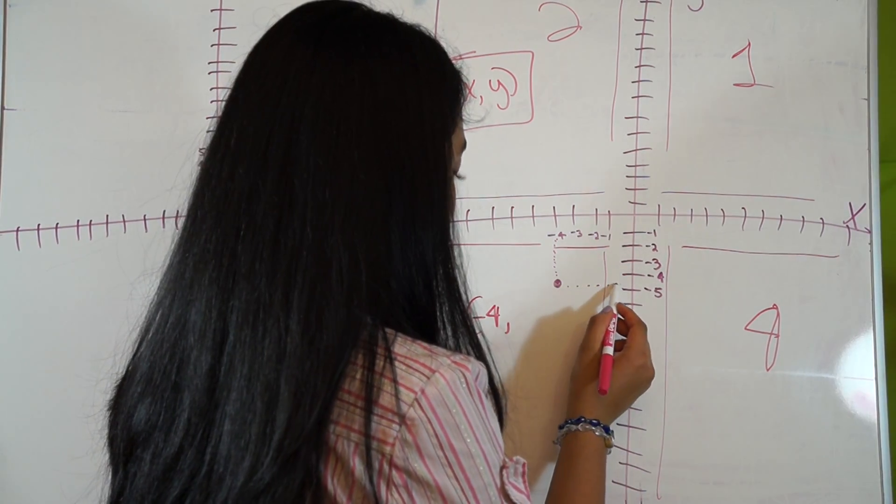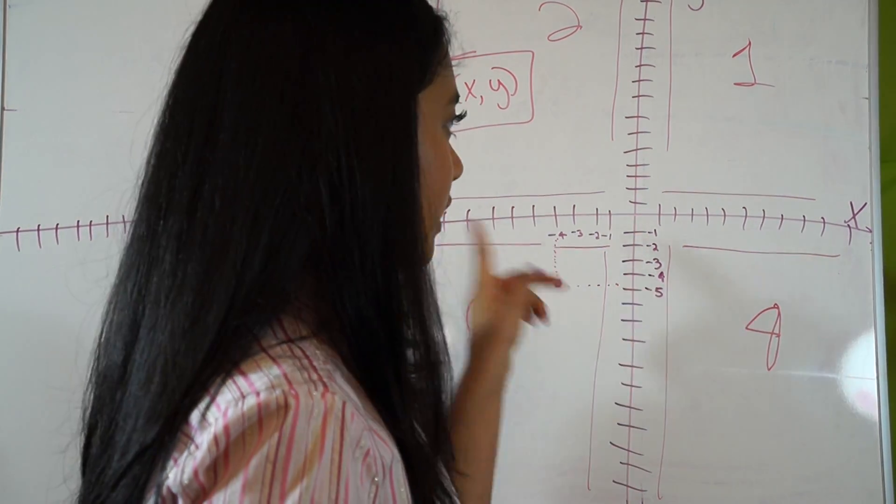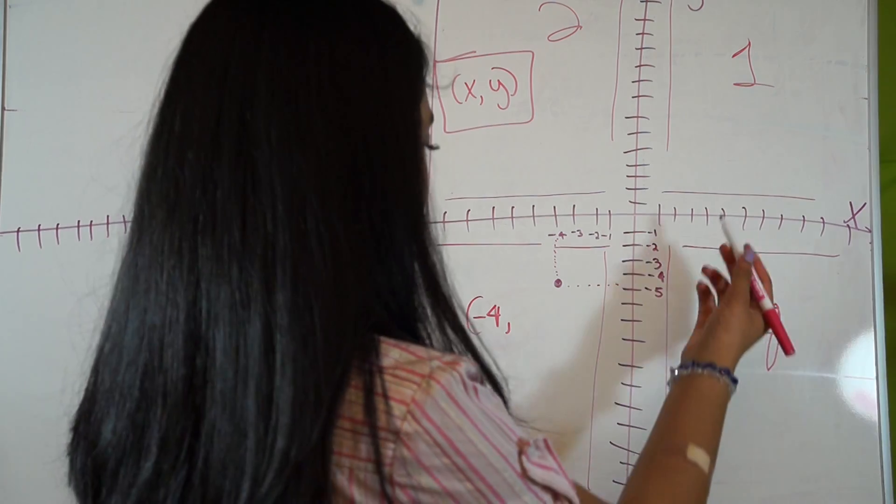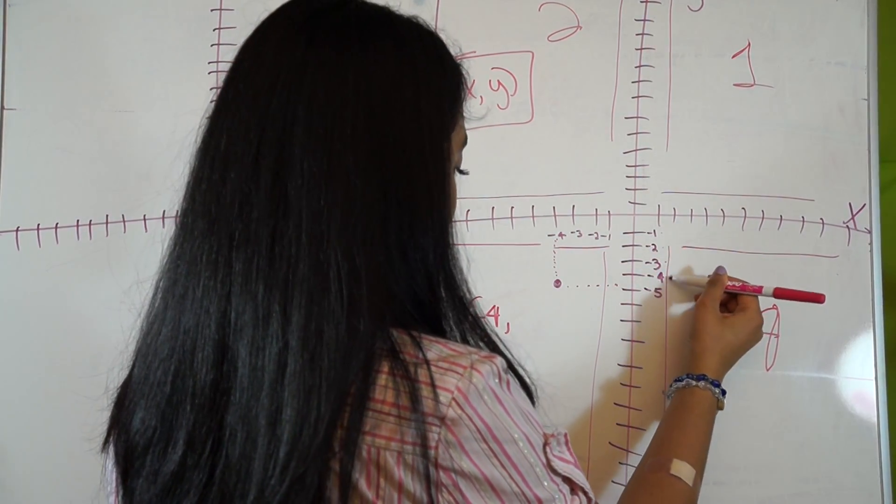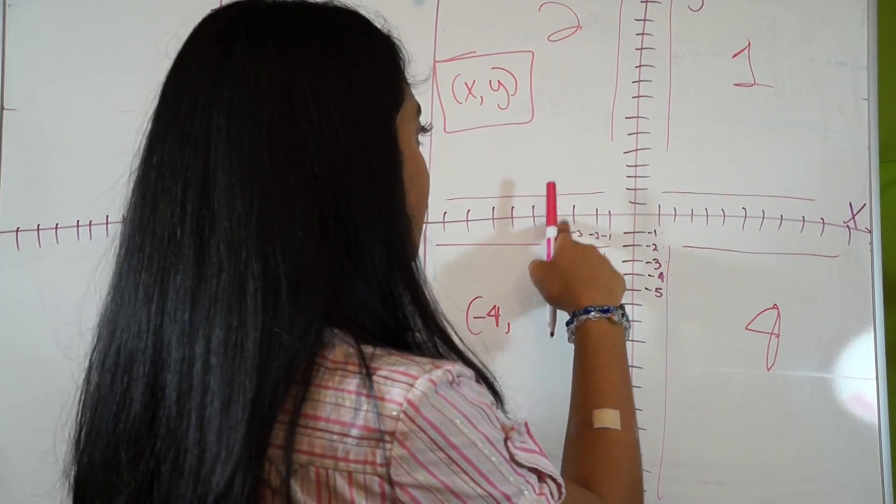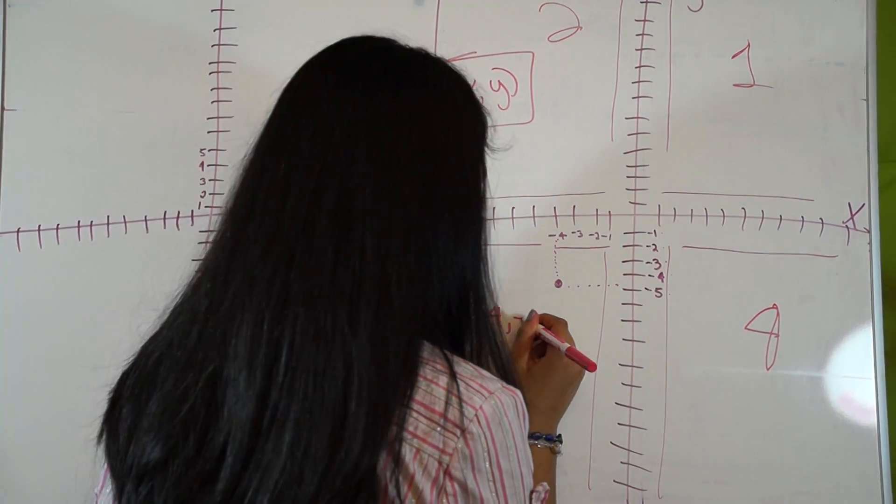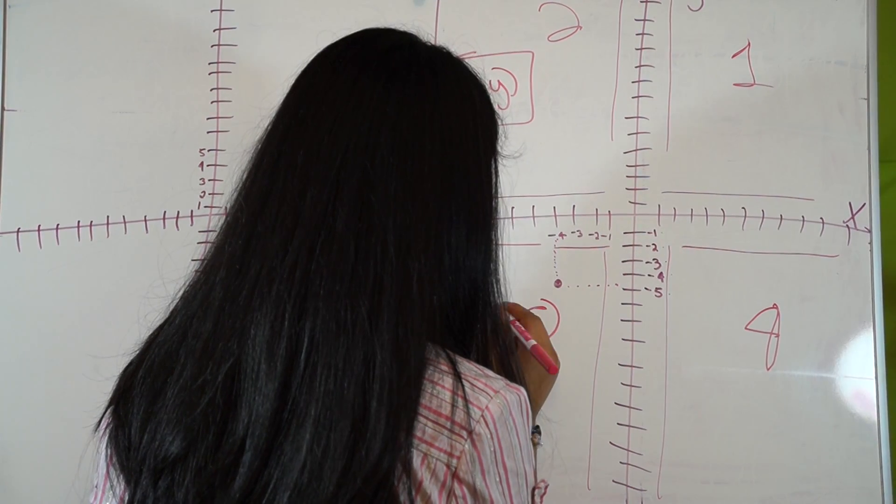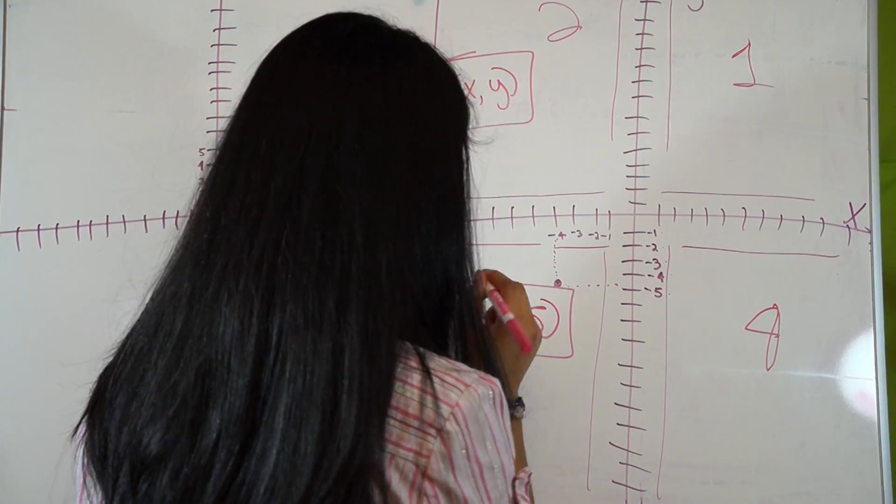And then our y would be down negative five, cause it's negative one, negative two, negative three, negative four, negative five. And you see a point at negative five for y, and we see a point for negative four for x. So our x and y coordinate here is just negative four and negative five.